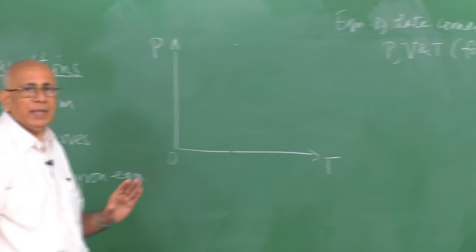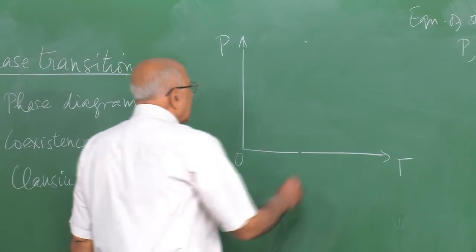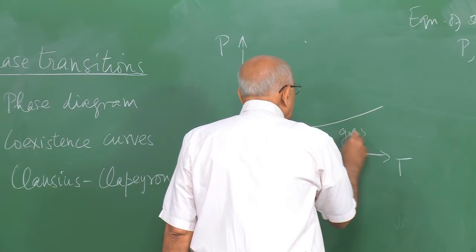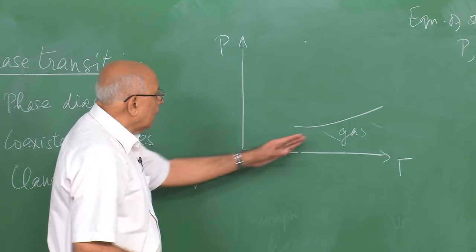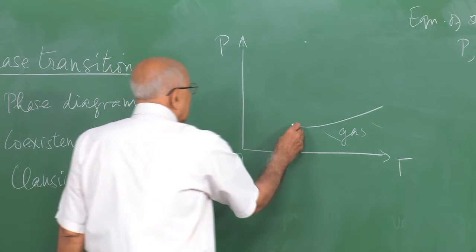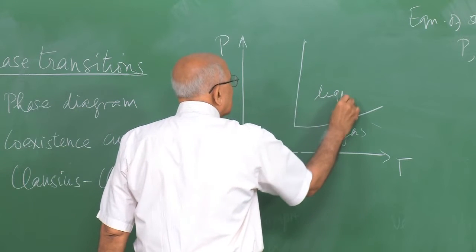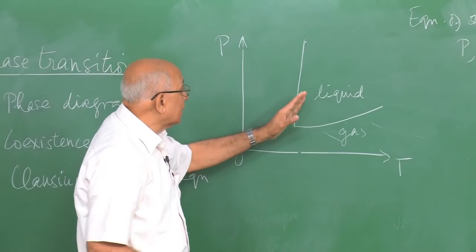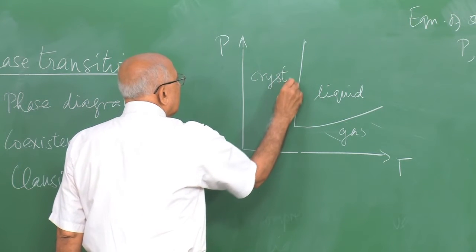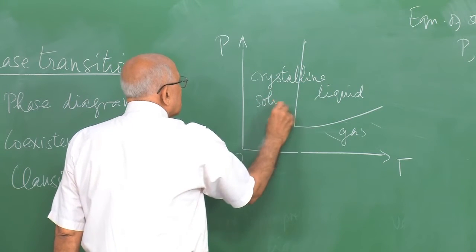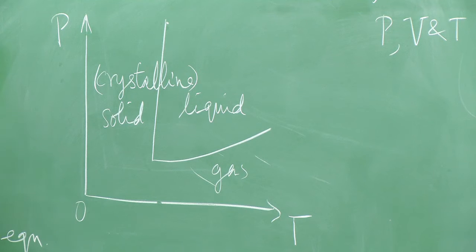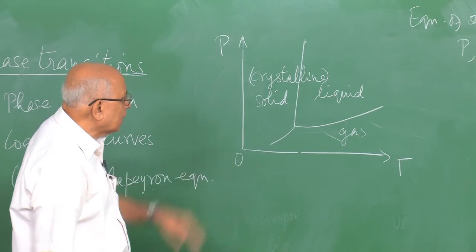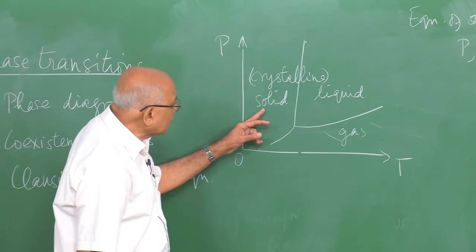When you plot P versus T, it is observed generically that at low pressures and sufficiently high temperatures the system is in a gas phase. At sufficiently low temperature, if the pressure is increased the system liquefies — this is the liquid phase, with a curve separating the liquid phase and the crystalline solid phase. There is a further curve which goes down and the substance becomes a solid at the lowest temperatures. This curve separates the solid phase from the gas phase.